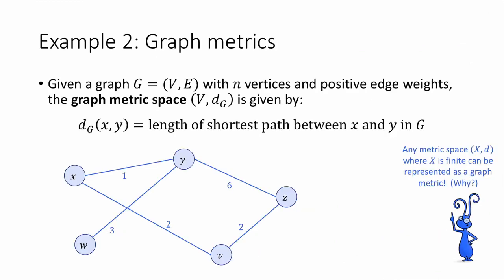A second useful example is graph metrics. So suppose we have a graph G with n vertices V and with positive edge weights. Then the graph metric space on the points V, the vertices, with the distance function d_G, is given by d_G(x, y). So the distance in the graph between x and y is just defined to be the length of the shortest path between x and y in G.